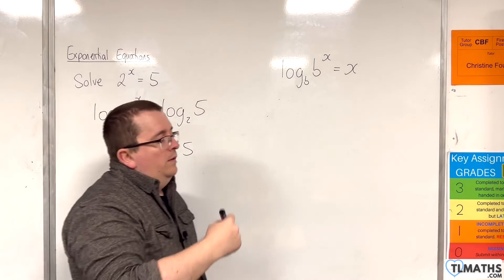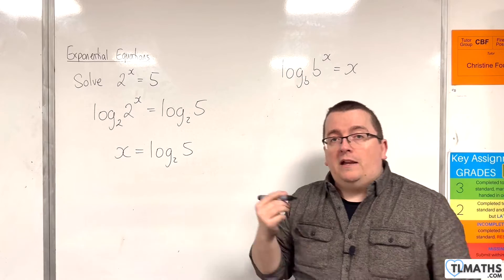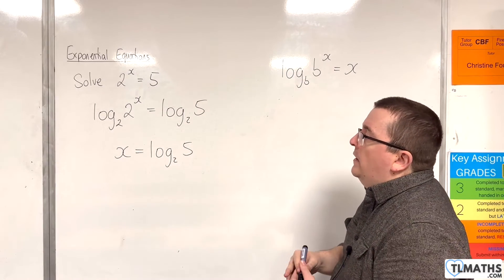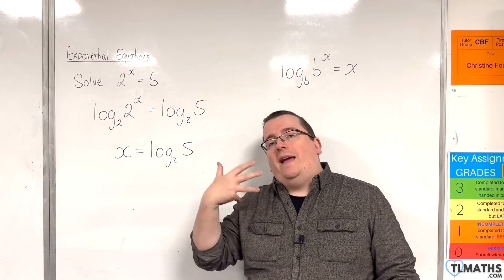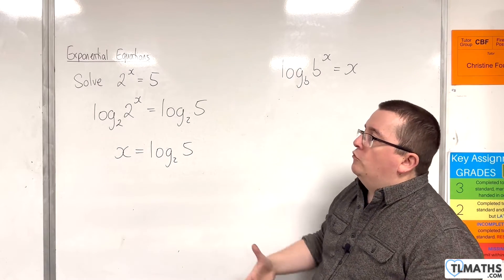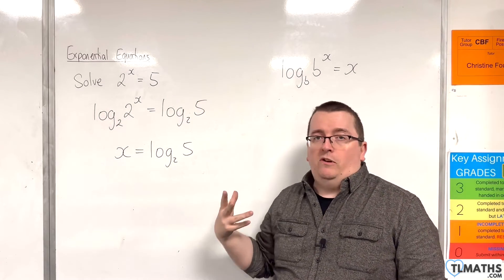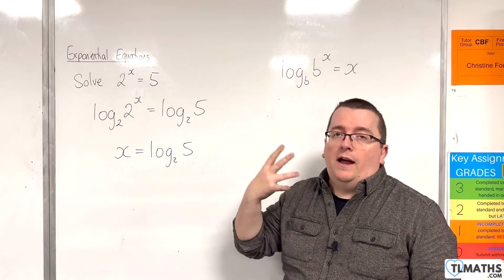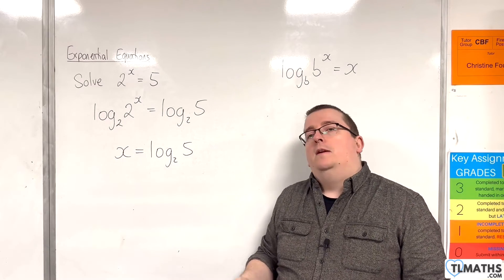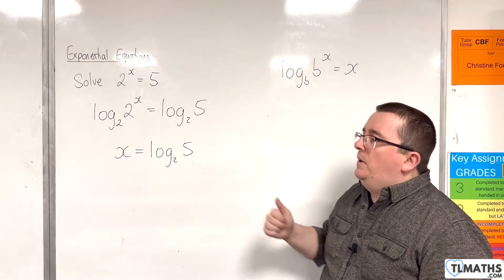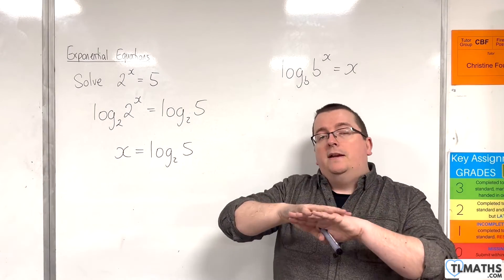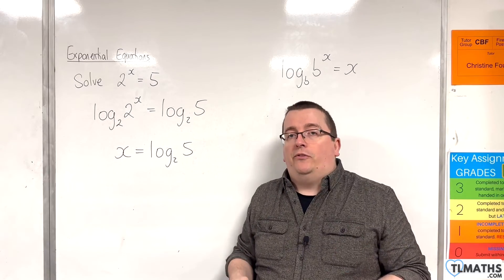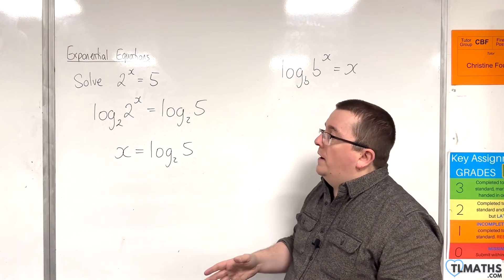Now, this method of logging both sides like this is a really useful technique. Because you don't actually have to take the logarithm of base 2 of both sides. So, you could have used another base logarithm. But, more on that later, when we come to look at more complicated examples where we're going to be taking the logarithm of both sides and working it through that way.